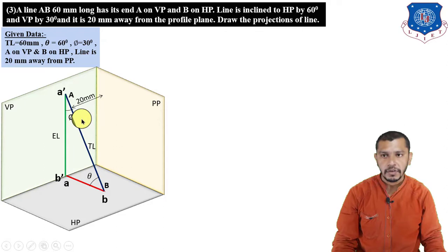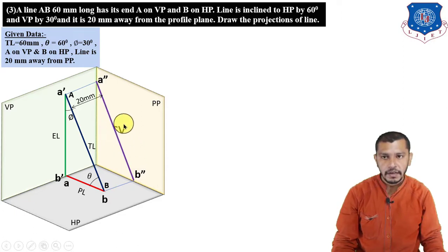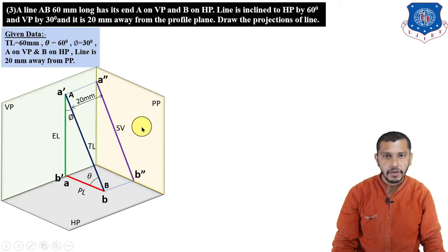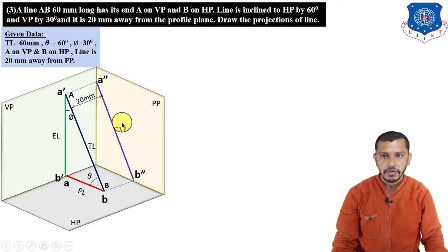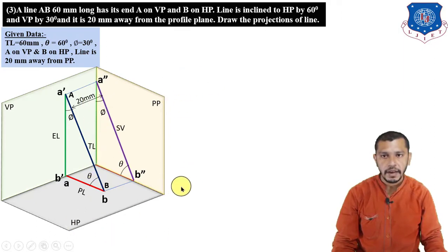The side view length equals the true length because the line is parallel to the profile plane. When θ + φ = 90°, the line is parallel to the profile plane, and the side view gives the true length. The side view is inclined at θ to the horizontal plane and φ to the vertical plane. Now rotate the horizontal plane 90 degrees clockwise and the profile plane 90 degrees clockwise to obtain the orthographic view. In the orthographic projection, x1y1 is the reference line between the vertical plane and profile plane.